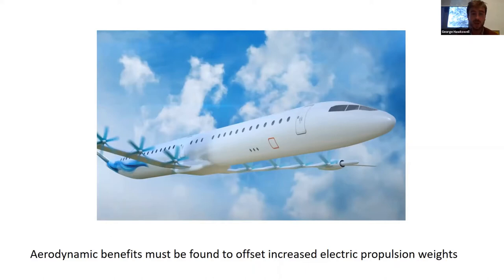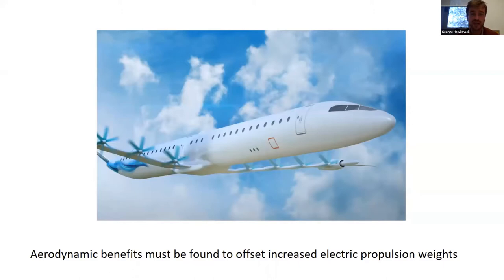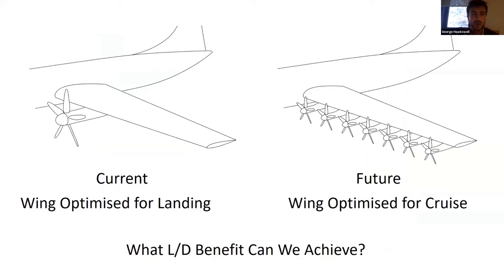One of the main advantages is the flexibility of electric motors. If you take 20 or 30 electric motors, for the same amount of power as one or two larger motors, they have very similar efficiencies. This means we can split propulsion into many smaller units and position them anywhere around the aircraft. In the image shown, there are eight leading-edge propellers spread across the wing, enabling a distributed propulsion system to make the aircraft more efficient.